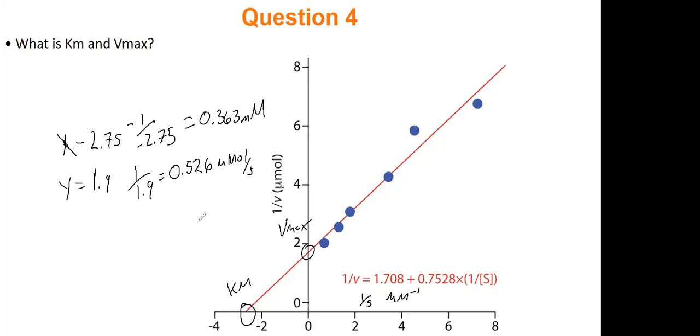Alright, so any questions about that process? You do have to flip it. I flipped it in both cases, right? So the x-intercept is like negative 2.75, so I did one divided by 2.75. The y-intercept was 1.9, so I did one over 1.9.